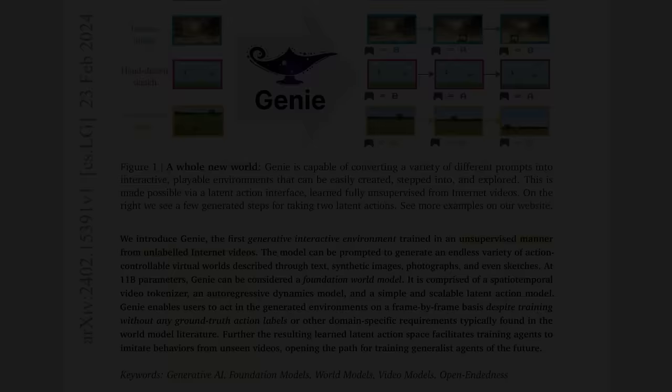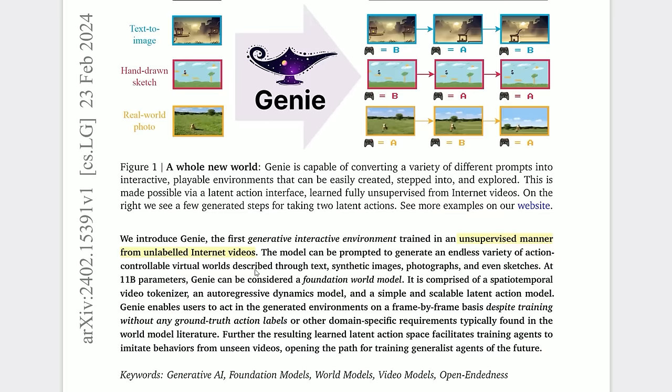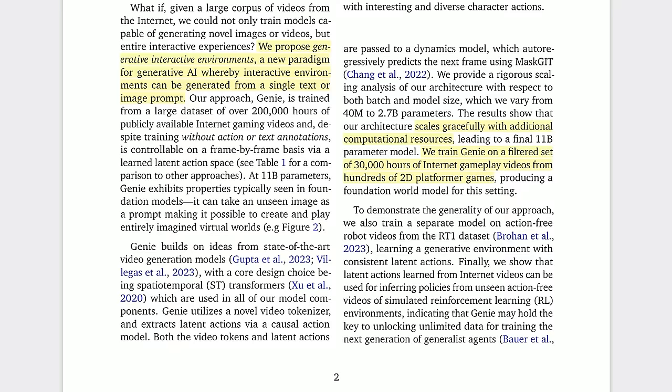There's one key detail I don't want you to miss from the Genie paper. The final version of Genie at 11 billion parameters was trained in an unsupervised manner from unlabeled internet videos. They didn't pair up an image with controller movements or text and tell the model what happened next — there was no such human supervision. It was just hundreds of thousands of internet videos. And the results from the Genie architecture scale gracefully, they say, with additional computational resources.